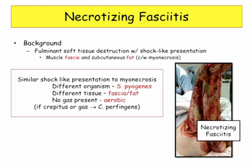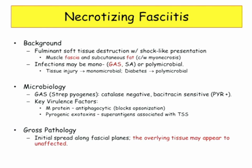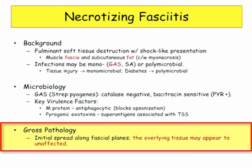Surgical debridement is the mainstay of management for necrotizing fasciitis. It's usually monomicrobial, not polymicrobial, unless there's a reason like diabetes. Group A strep is the key organism — Staph can do it too, but they'll describe group A strep. There are many virulence factors for group A strep worth knowing, though they're not all critical specifically for necrotizing fasciitis. The infection spreads along fascial planes.